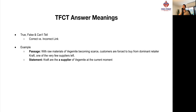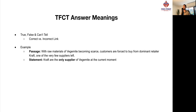Let's go through a correct versus an incorrect link first. The passage says: with raw materials, Vegemite is becoming scarce, and customers are forced to buy from dominant retail Craft, one of the very few suppliers left. The statement says: Craft are a supplier of Vegemite at the current moment. This would be true because it says Craft are one of the very few suppliers left — they're still remaining. But if we change this to 'Craft are the only supplier of Vegemite at the current moment,' this would be false, because the passage says there are few suppliers left, meaning more than one. Therefore, Craft cannot be the only supplier.